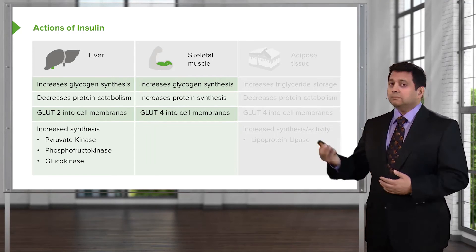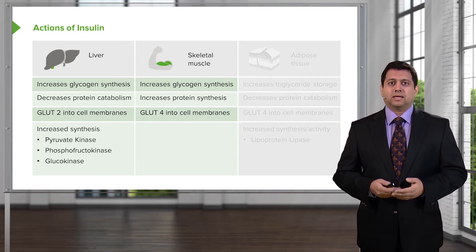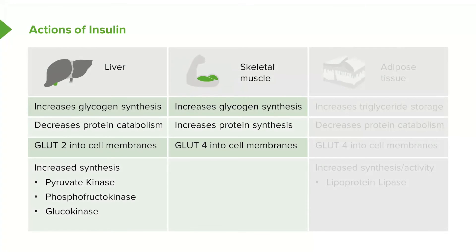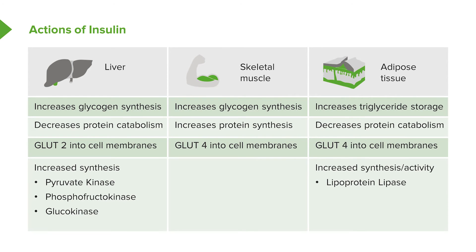In the skeletal muscle, insulin increases glycogen synthesis and protein synthesis, and it uses the porter GLUT4 into the cell membranes. And in the adipose tissue, it increases triglyceride storage and decreases protein catabolism. It uses the porter GLUT4 and moves sugar into cell membranes. There is increased synthesis and activity in adipose tissue under the influence of insulin, and we use a hormone called lipoprotein lipase.